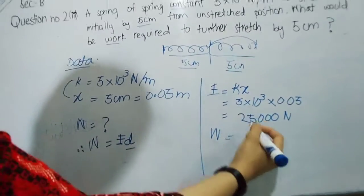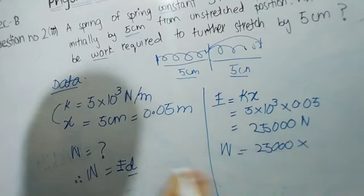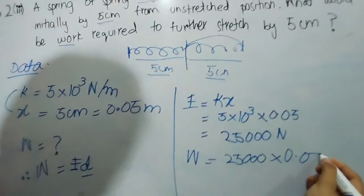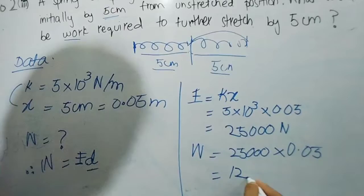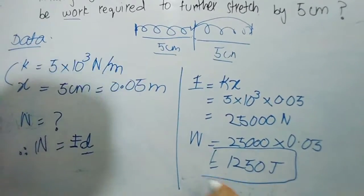So work equals force, which is 25,000 Newton, into distance which is 0.05, and that gives me 1,250 joules. This is our answer. Thank you.